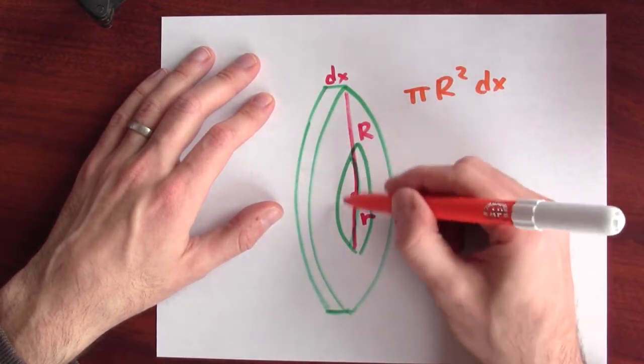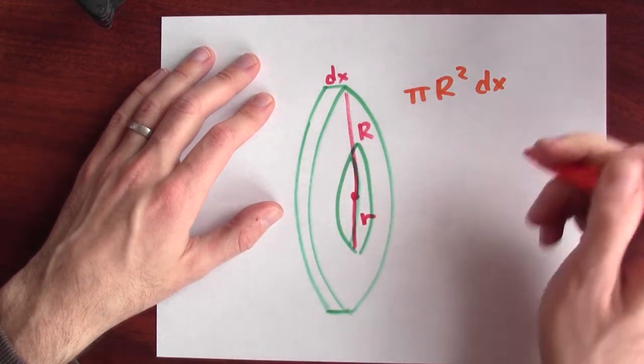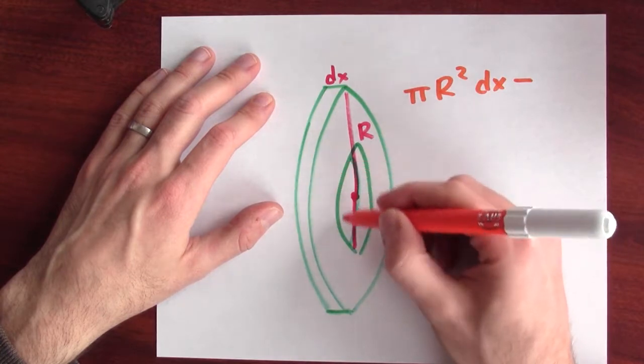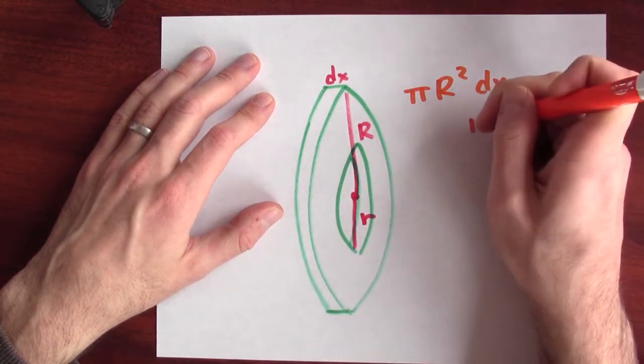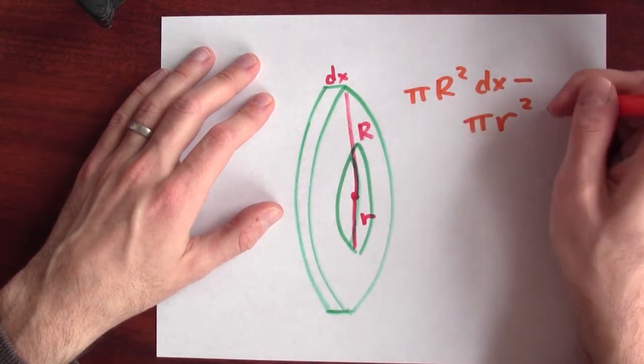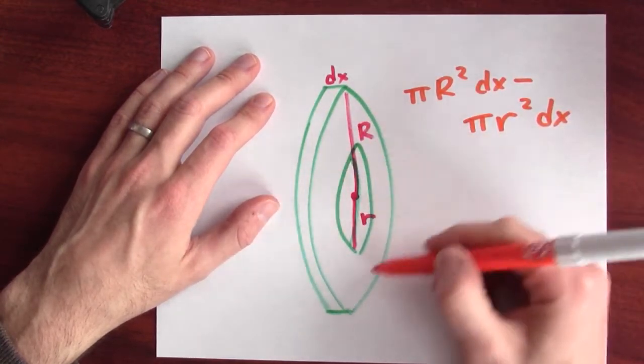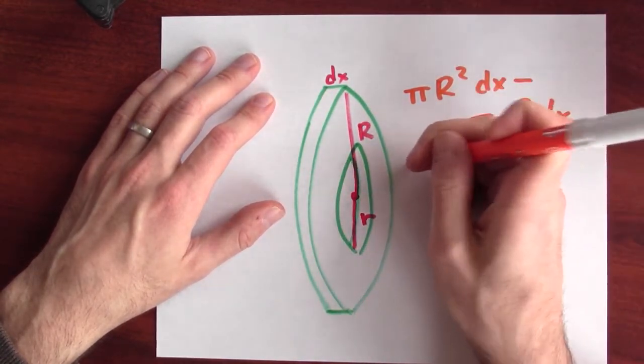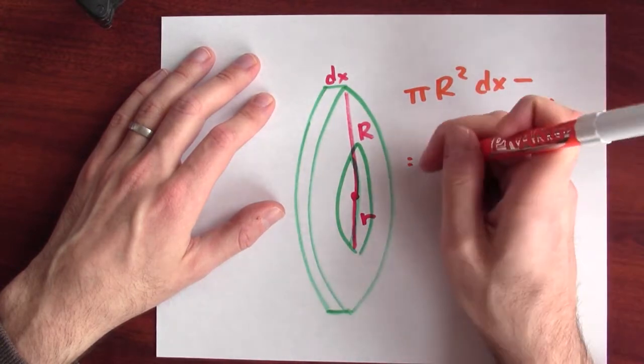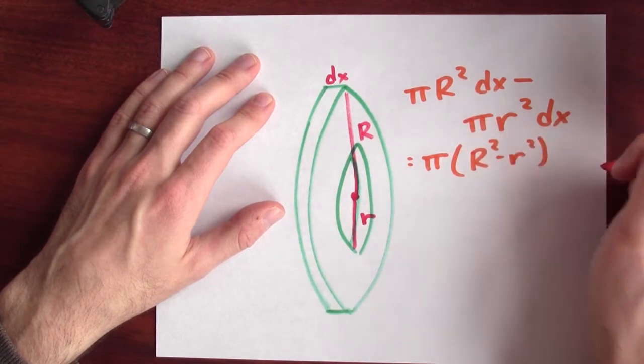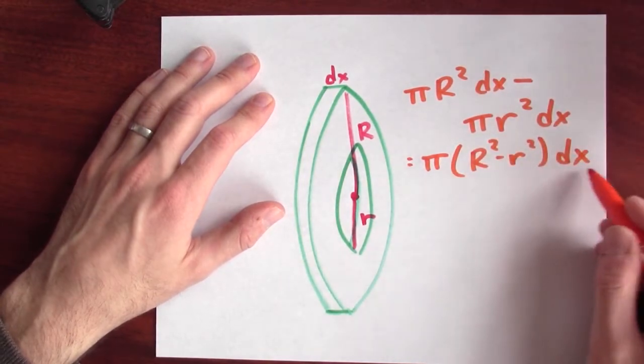But then I'm drilling out this middle part here to make the washer. So I'm going to subtract from this the volume of this inside cylinder, which is π little r squared dx. So this is the volume of just the washer, the part that remains. And I can write this maybe a little bit more reasonably as π times big R squared minus little r squared times the thickness dx.